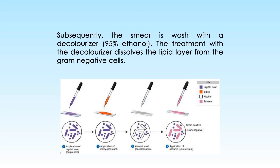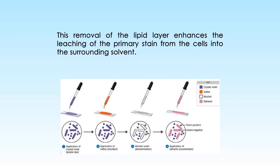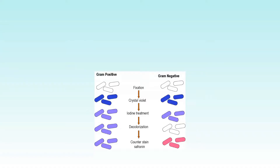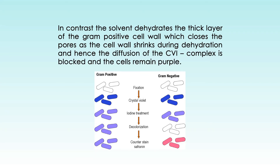Subsequently, the smear is washed with a decolorizer, that is 95% ethanol. Treatment with the decolorizer dissolves the lipid layer from the gram-negative cells. This removal of the lipid layer enhances leaching of the primary stain from the cells into the surrounding solvent. In contrast, the solvent dehydrates the thick layer of the gram-positive cell wall, which closes the pores as the cell wall shrinks during dehydration, and hence the diffusion of the CVI complex is blocked and the cells remain purple.